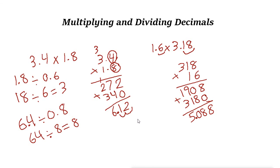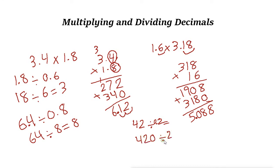Now let's look at another example: 42, a whole number, divided by 0.2. For 42 divided by 0.2, do the same process — multiply both by 10 to get 420 divided by 2. Using long division, you get 210. When dividing, the divisor must be a whole number. The divisor is 0.2 and the dividend is 42 — the dividend being a decimal doesn't matter, but the divisor must be whole.